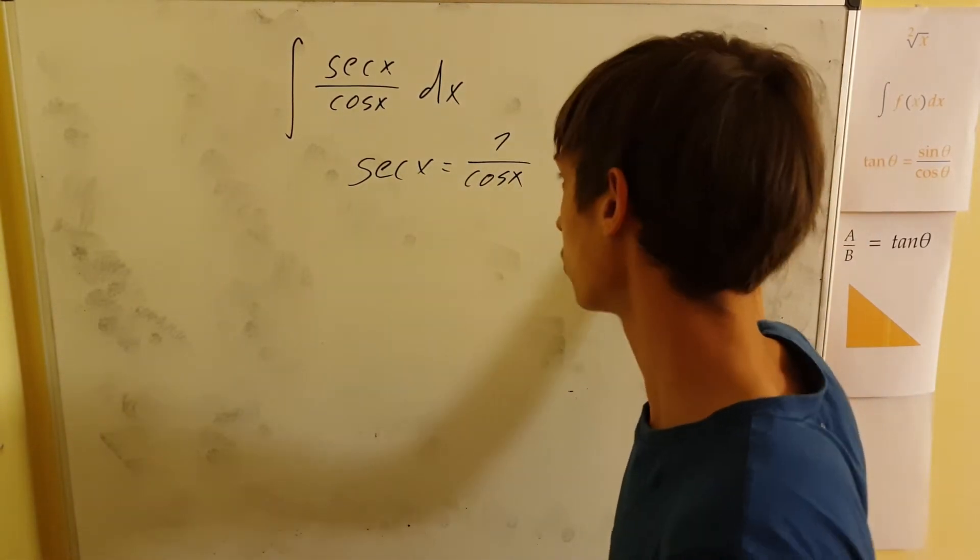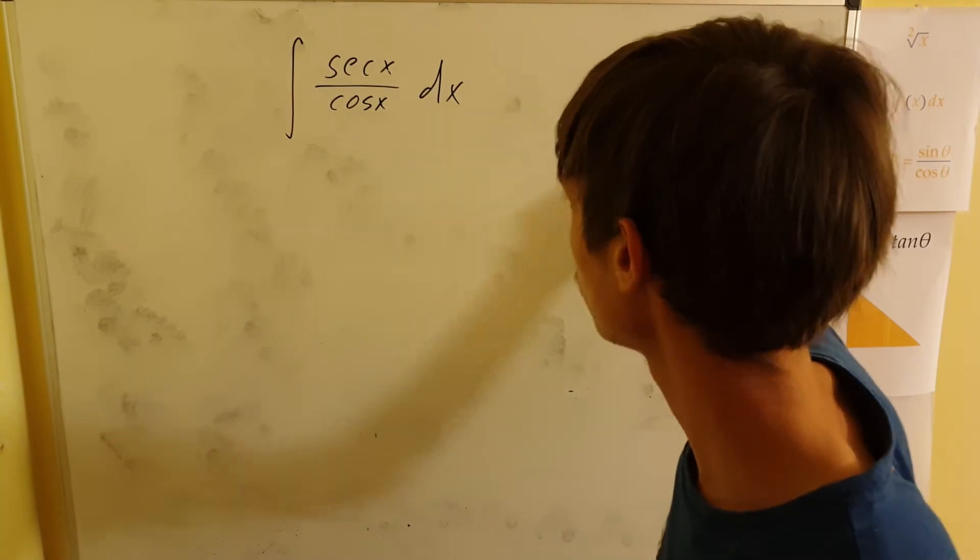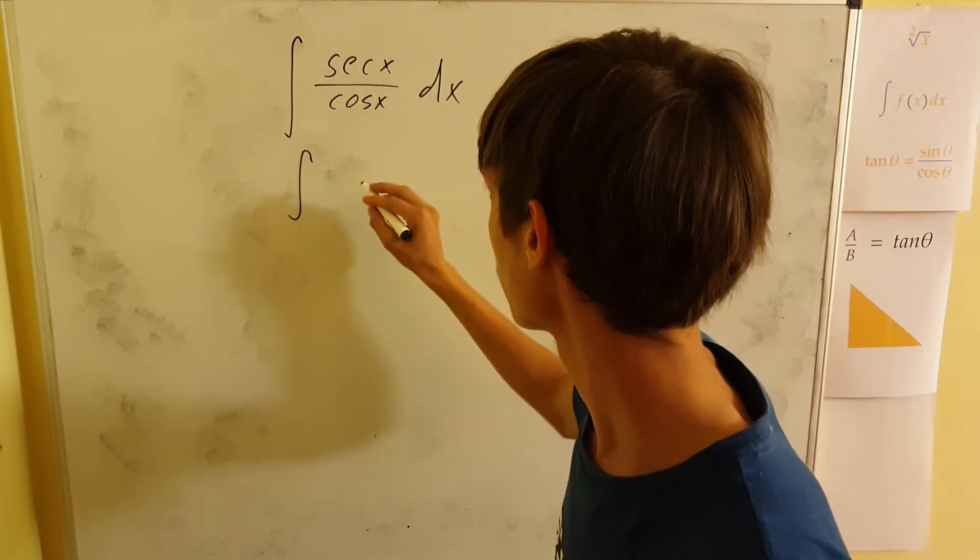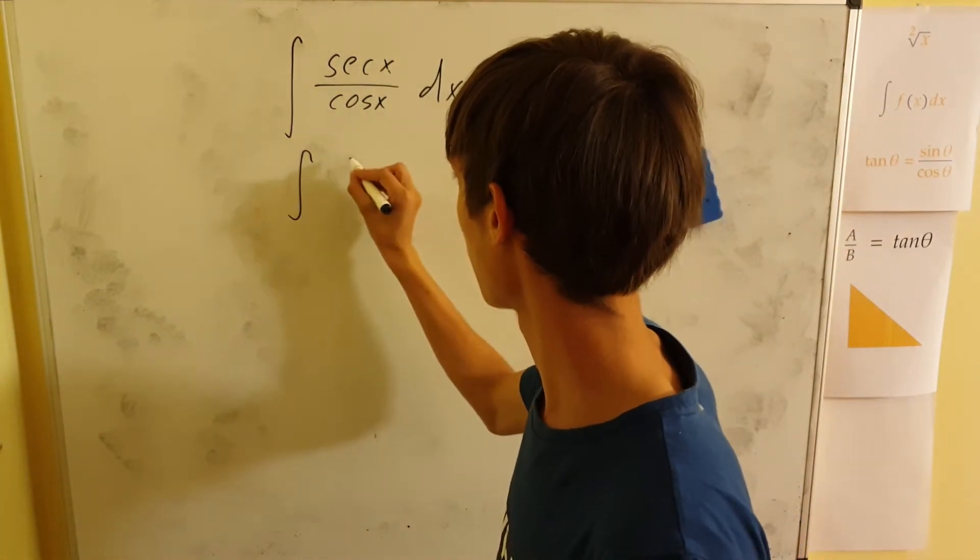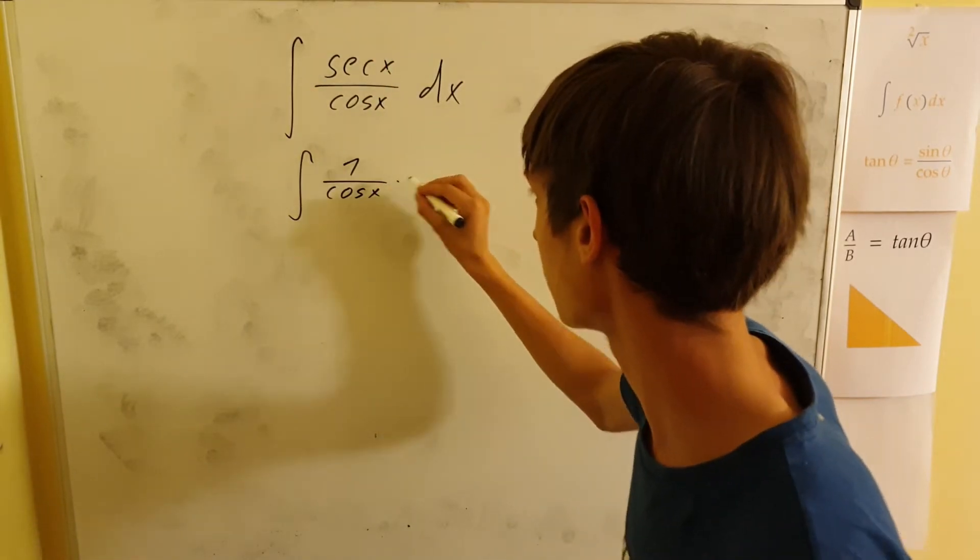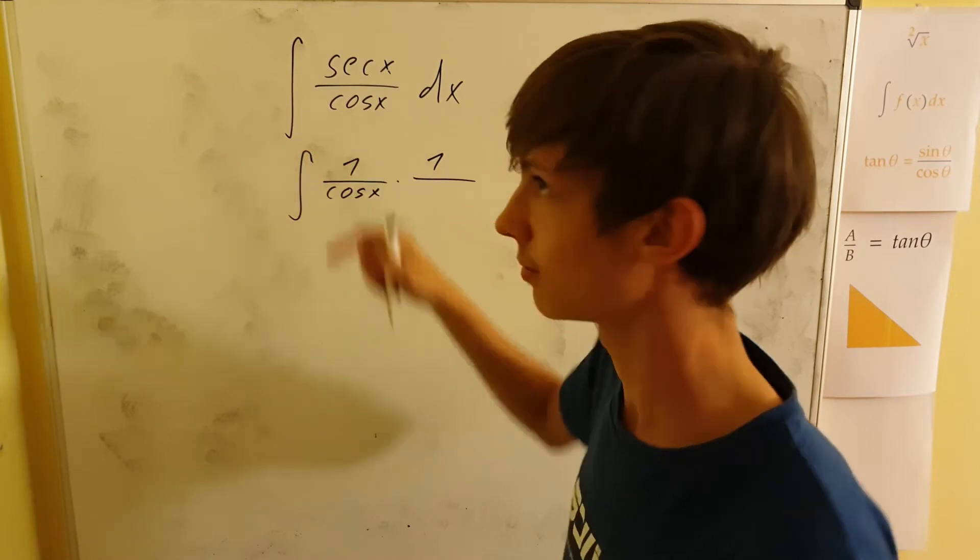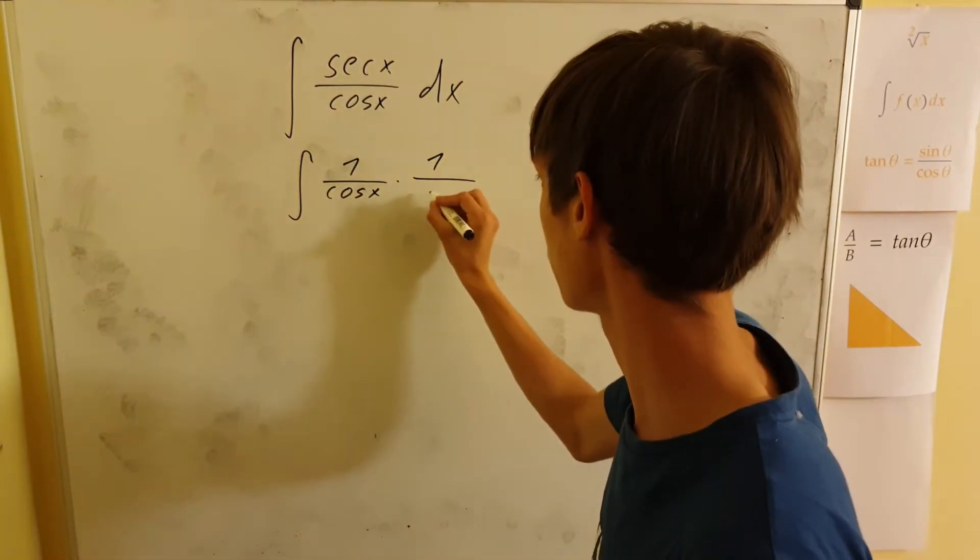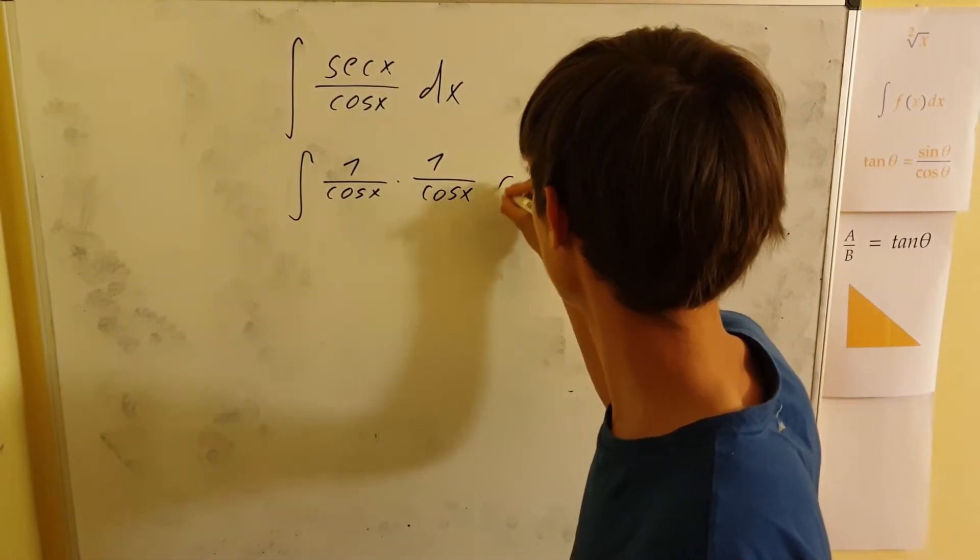It doesn't matter which you choose, but I will choose to replace secant. So it's the same as 1 over cosine x (that's the secant) times 1 over the denominator cosine x, and dx.